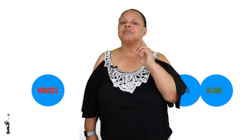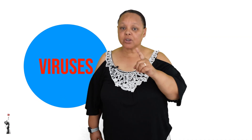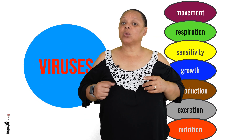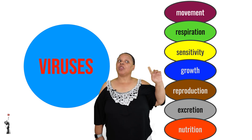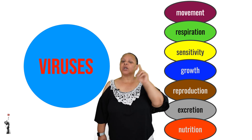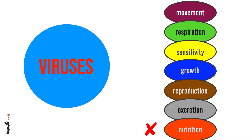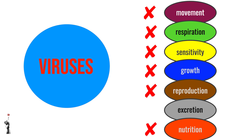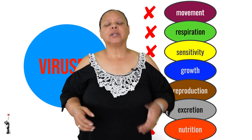Let's take a closer look at viruses. They are classified as non-living because they don't perform any of those seven life processes. They don't eat, they don't grow and they don't respond to stimuli. In fact viruses can't even move on their own. There is no cellular respiration either. They don't make energy like living organisms do, and they can't even reproduce by themselves.